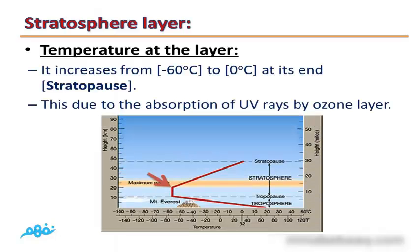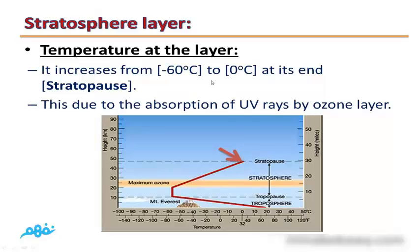Temperature at the Stratosphere layer increases gradually from negative 60 degrees Celsius at its beginning until it reaches 0 degrees Celsius at its end, at the Stratopause. This is due to the absorption of ultraviolet rays by the ozone layer, which increases the temperature of this layer.